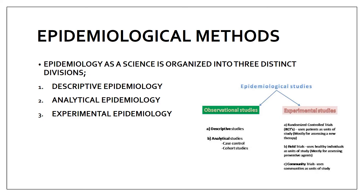There are three epidemiological methods: descriptive, analytical, and experimental. Epidemiological study is divided into two types — observational and experimental. Observational means you observe the disease; experimental means you conduct experiments such as human or animal trials to find treatments or vaccines. Descriptive and analytical epidemiology fall under observational, while experimental epidemiology involves trials. Starting with the first: descriptive epidemiology.